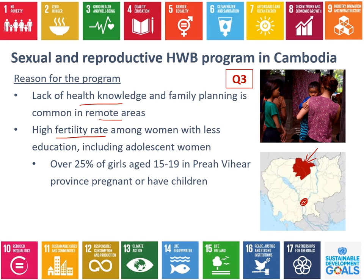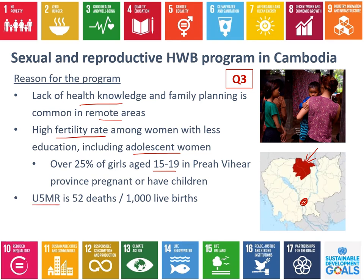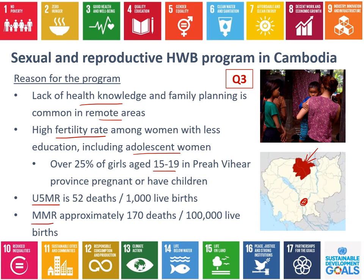There are also very high rates of pregnancy amongst adolescent women - more than a quarter of girls aged 15 to 19 in this province are either pregnant or have had children. That's a very high number of teenage mothers. It is recommended that women wait a little longer to start having children, as their bodies often aren't ready at that young age, and early pregnancy means reduced access to education and generally less money to support their families. There's also a high under-five mortality rate of over 50 deaths per 1,000 live births, and a high maternal mortality rate.